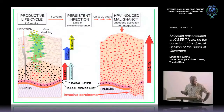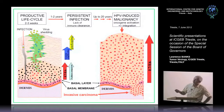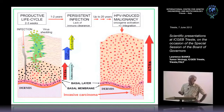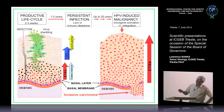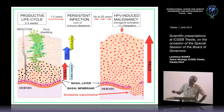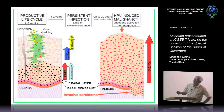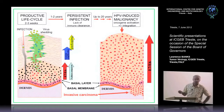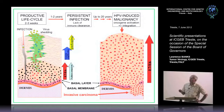The virus itself has a very unusual life cycle. It is absolutely linked to this differentiation process that occurs within the infected epithelium. The virus is believed to infect these basal cell compartment cells through microtraumas in the skin. And then as these cells begin a process of differentiation, you see coordinate expression of the different viral gene products, which ultimately give rise to new infectious virus particles.